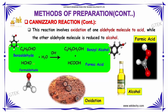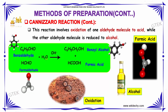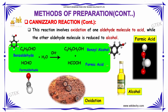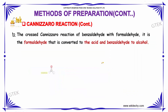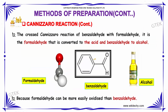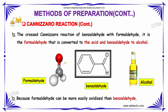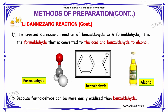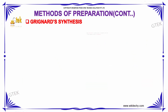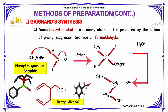In the crossed Cannizzaro reaction, benzaldehyde along with formaldehyde reacts with water, forming benzyl alcohol as well as formic acid. It is the formaldehyde that is converted to the acid and benzaldehyde that is converted to the alcohol, because formaldehyde can be more easily oxidized than benzaldehyde.